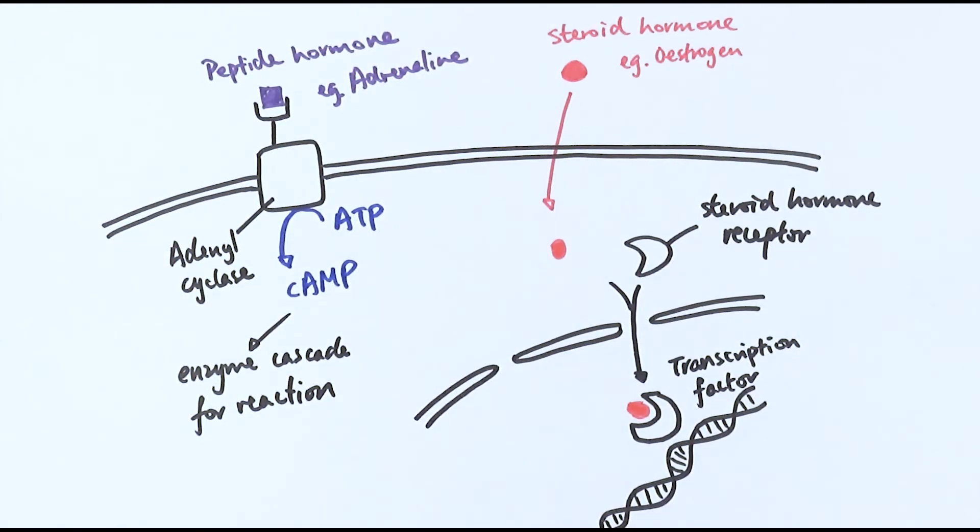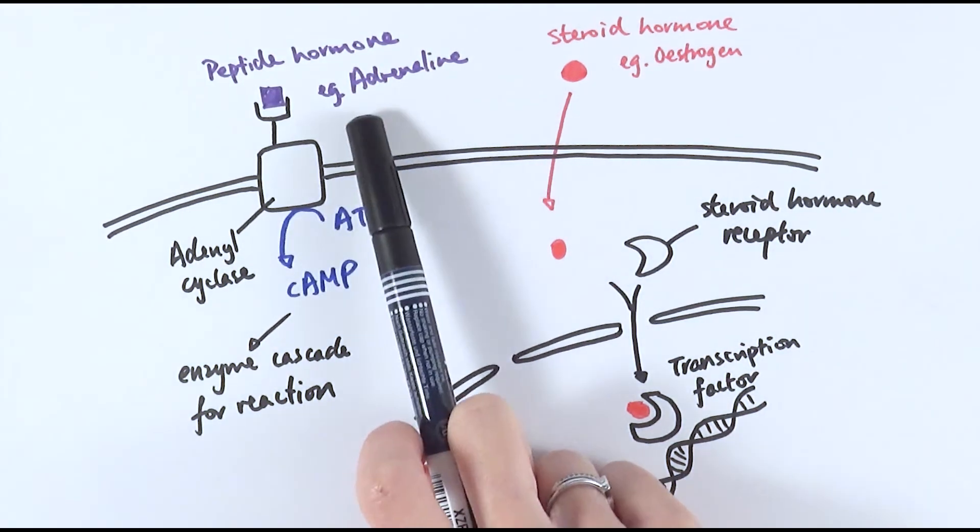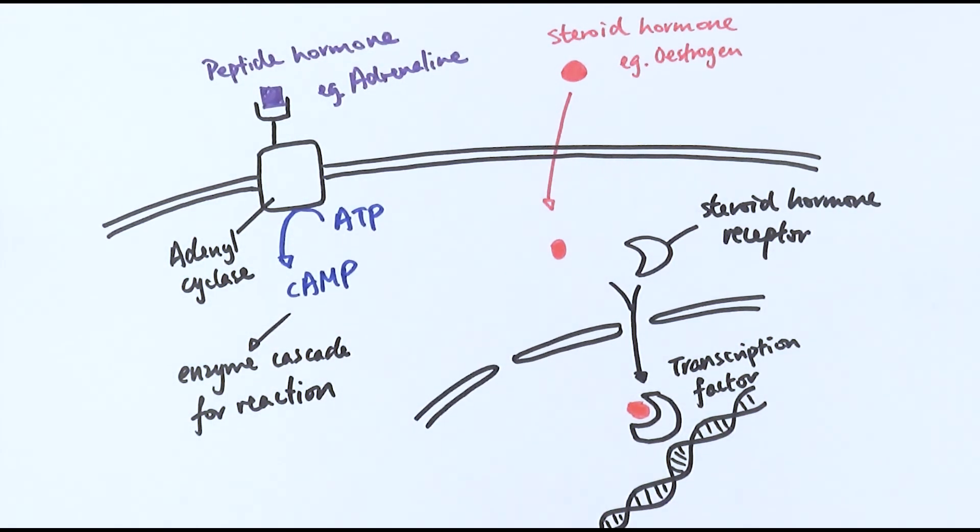These are the two types of hormones: peptide hormones and steroid hormones. Later on in the chapter we'll come back to the action of adrenaline and see how they actually are made in the first place and also how they can actually do the enzyme cascade.